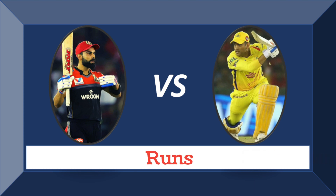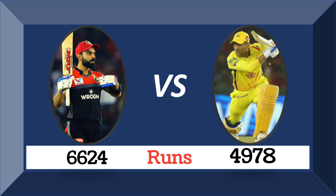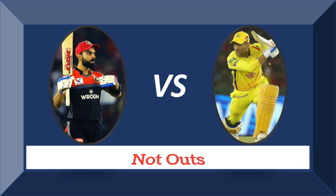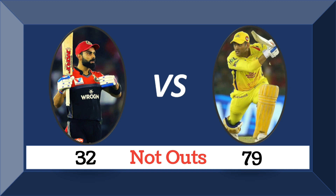Total runs scored: Kohli scored 6624 runs, Dhoni scored 4978 runs. Total not outs: Kohli was not out 32 times, Dhoni was not out 79 times.